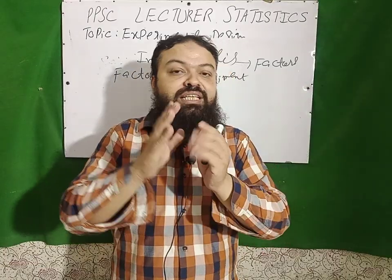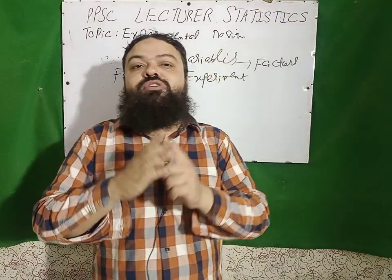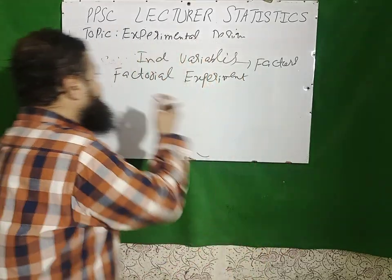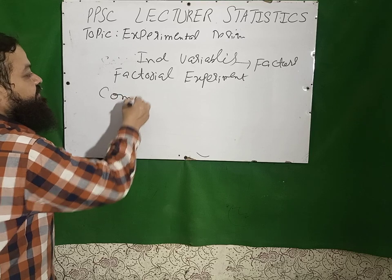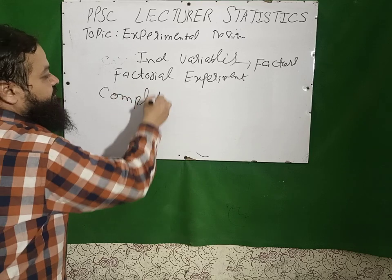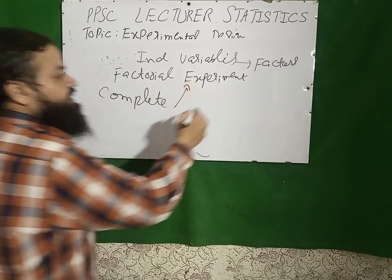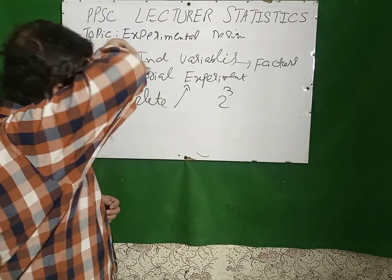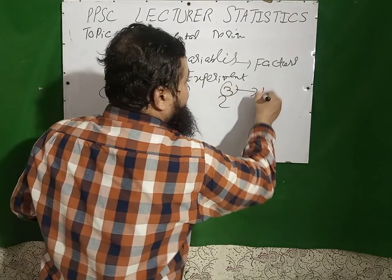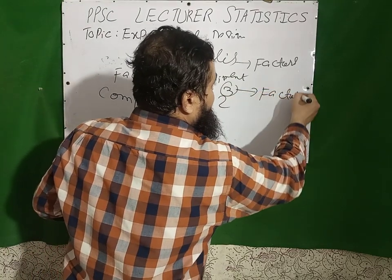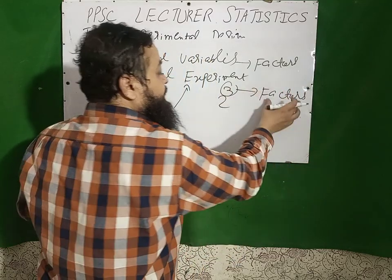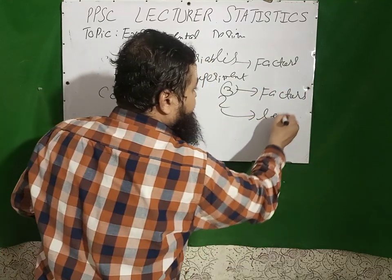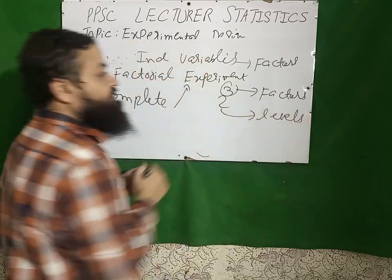A very important point: when each treatment combination is used the same number of times, we have a complete factorial experiment. If we have a 2³ factorial experiment, it has 3 factors and each factor has 2 levels.